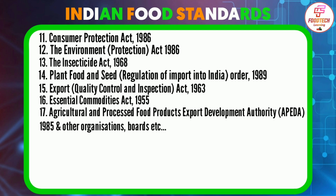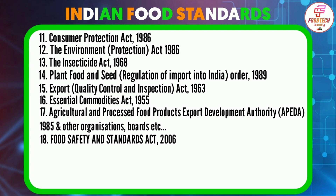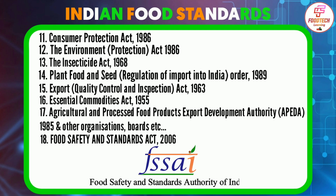Among other organizations and acts, the Food Safety and Standards Act was passed in 2006. This is the primary law for regulation of food products. The Food Safety and Standards Authority of India is the statutory body under this Food Safety and Standards Act.